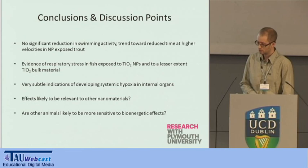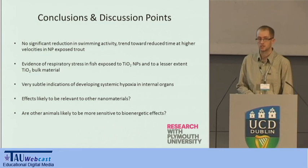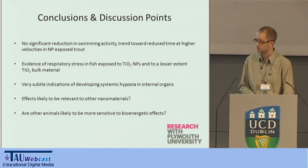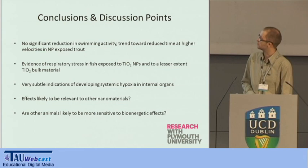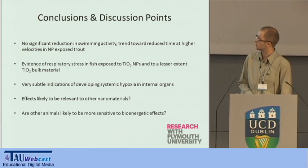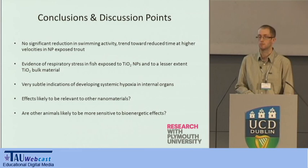To summarize: we didn't see any significant reduction in swimming activity, but there's a trend towards reduced time spent at higher velocities in the nanoparticle-exposed fish. There's evidence of respiratory distress in these fish, and some subtle indicators of developing hypoxia in the internal organs, including the brain. The questions for the audience are: do we think these effects are likely to be relevant to other nanomaterials, and are other animals likely to be more sensitive to bioenergetic effects than the trout? Thank you for your attention.